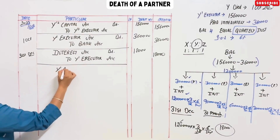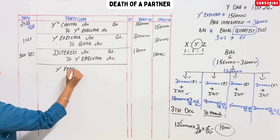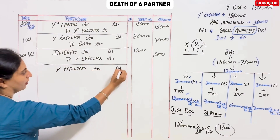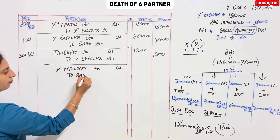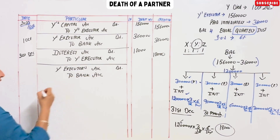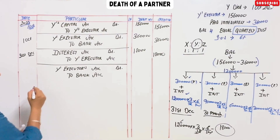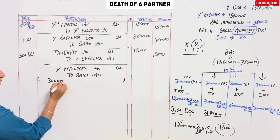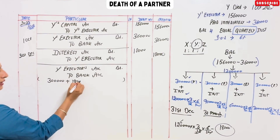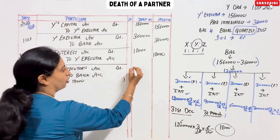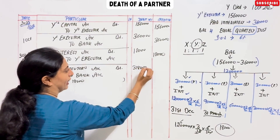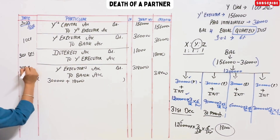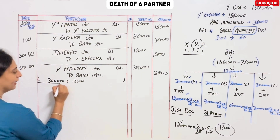Y Executor Account debit to Bank Account — 3,18,000. This is the payment of the 1st installment on 31st December.